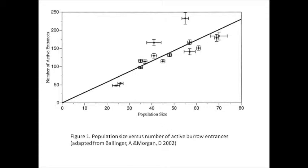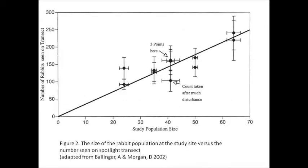The results presented in Figure 1 show the relationship between the number of active entrances and the population number given using the Peterson technique. The figure shows that the relationship is linear, with the number of active burrows increasing along with population size. Figure 2 shows the population size at the study site in comparison to the number of rabbits spotted along the transect. Again, the relationship is linear, showing that as the number of rabbits seen increased, so did the population numbers.